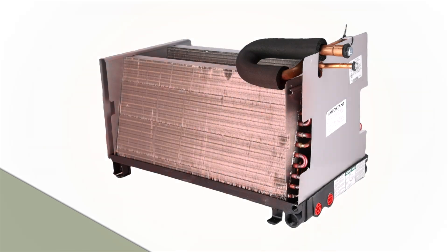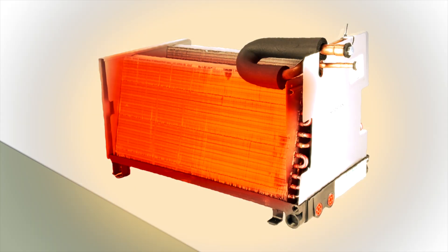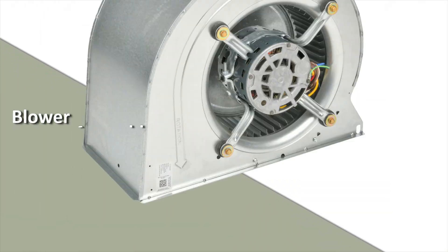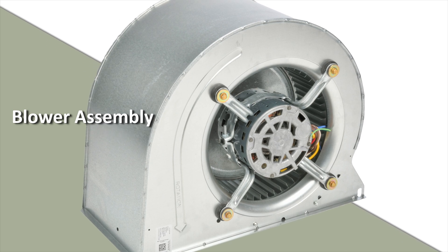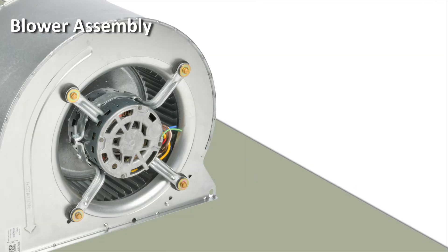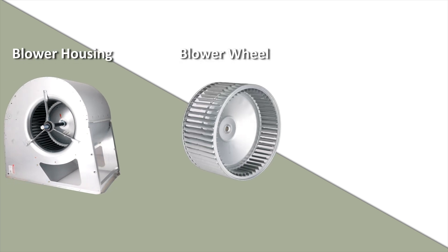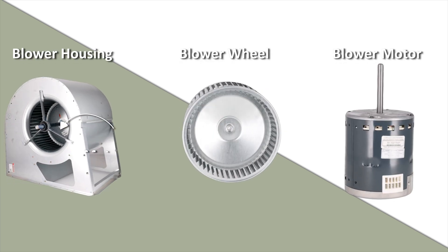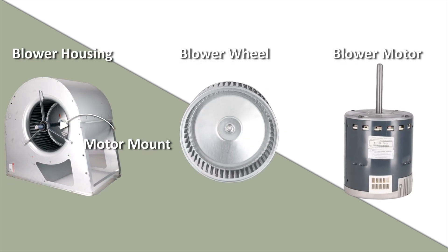Evaporator coils will absorb heat from the air. The air is blown through the coil through an assembly called a blower assembly, because it consists of individual parts. The parts in our Protech OEM blower assemblies are a blower housing, a blower wheel, a blower motor, and a motor mount in some cases.